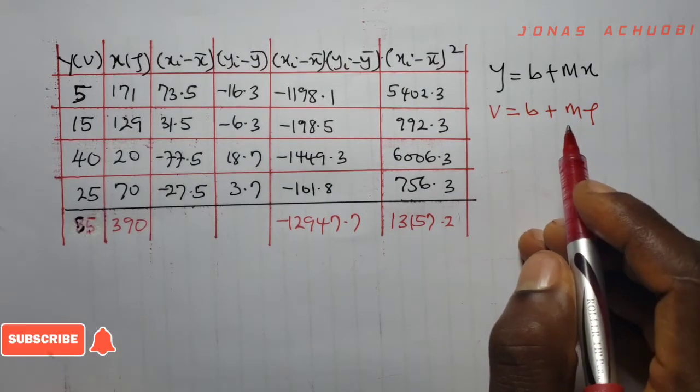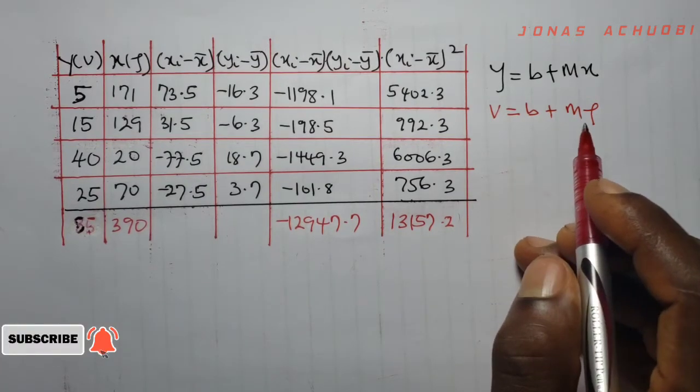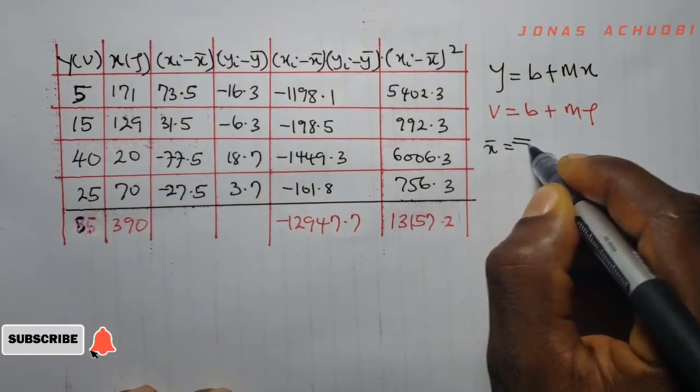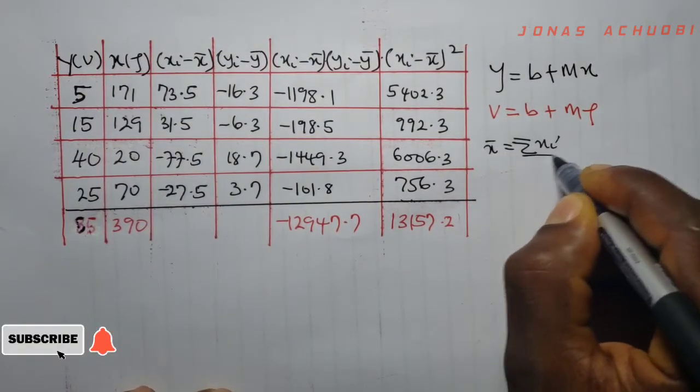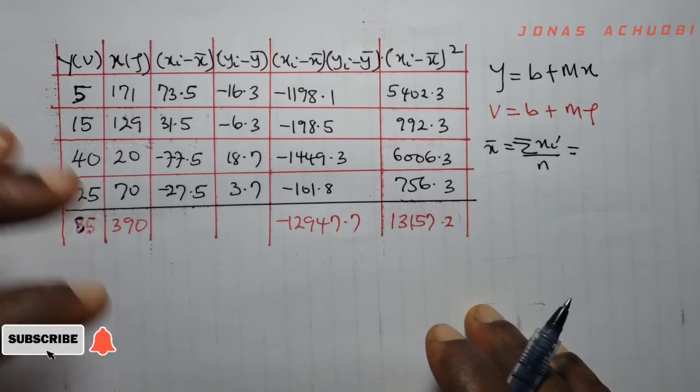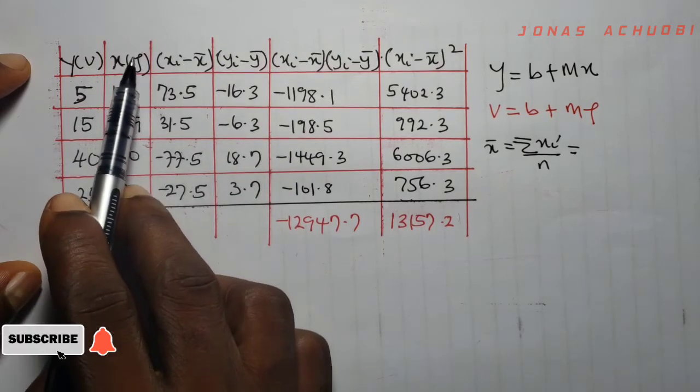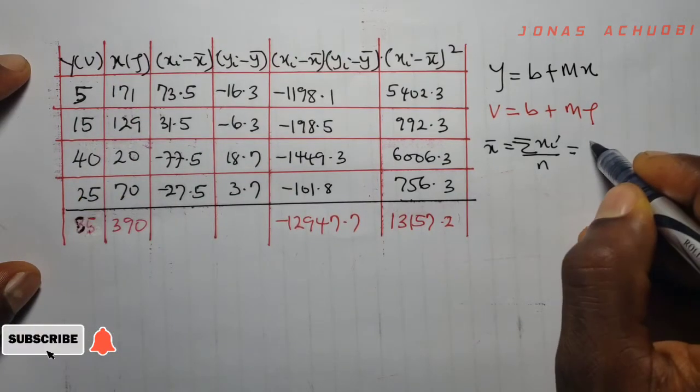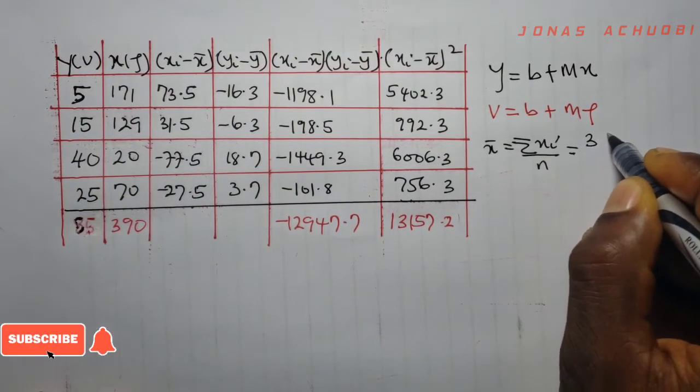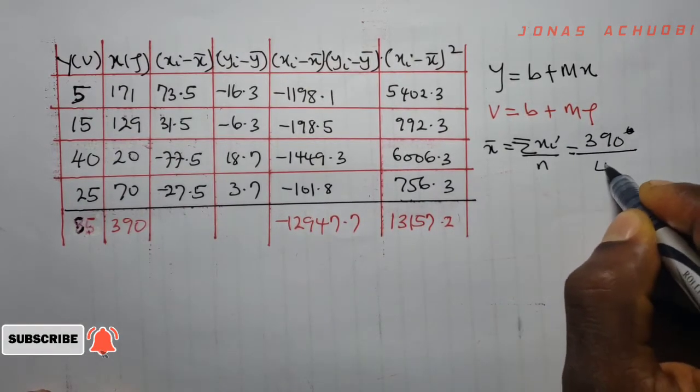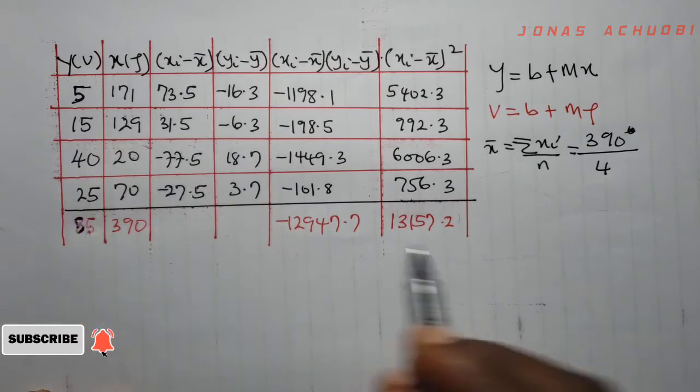The first thing we should calculate here are the means x bar and y bar. So x bar is equal to sigma xi over n. From the table of values on the left here, sigma xi is 390 divided by n is 4, giving us 97.5.